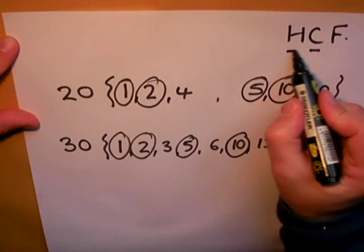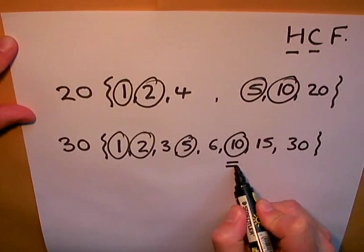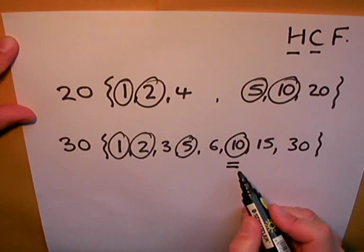Because I'm after the highest common factor, the highest common factor is 10. The highest common factor of 20 and 30 is 10.